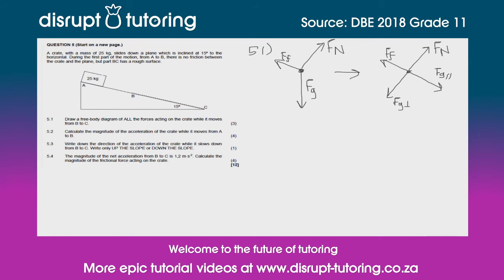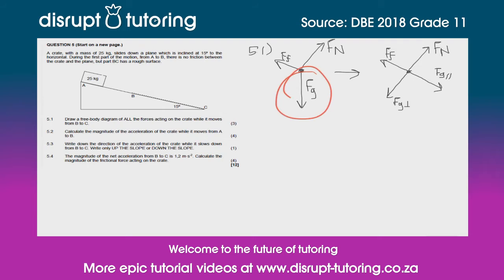Those are your two options. If you decide to go the parallel and perpendicular route, you shouldn't also put FG. Remember you're breaking it up into those components, so there's no need to put an FG as well if you're going to go this route.